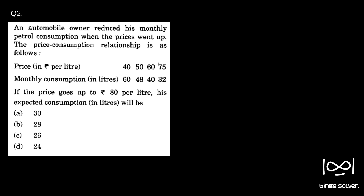Moving on to Question 2. An automobile owner reduced his monthly petrol consumption when prices went up. The price-consumption relationship is as follows: price per litre is 40, 50, 60, 75, and the corresponding monthly consumption in litres is 60, 48, 40, 32. So as price increases, the consumption is decreasing. If the price goes up to 80 per litre, what will his expected consumption in litres be?